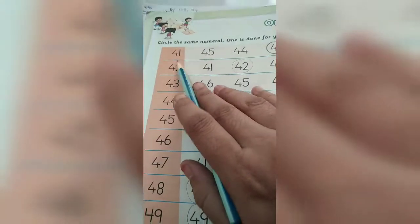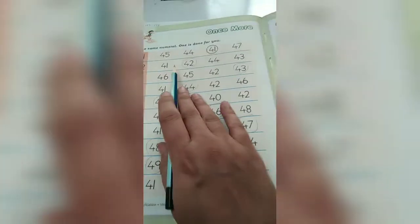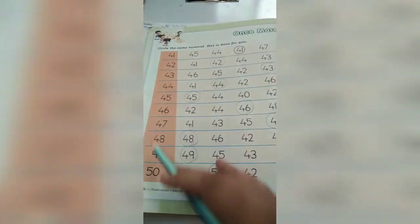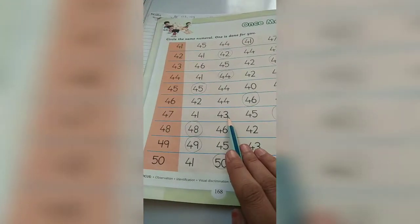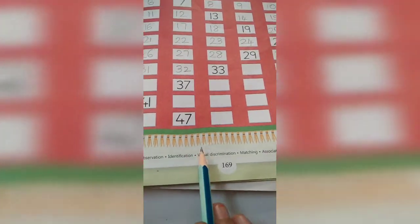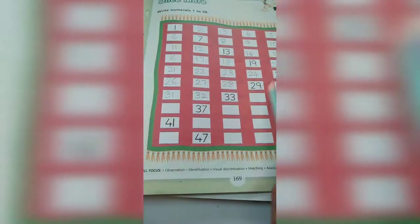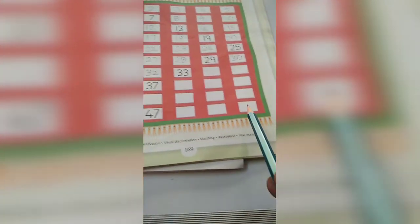Here now, you have to circle the same number: 41, 42, 43. All the numbers are in line, you have to circle the same number. Then here, page 169, you have to write 1 to 50. 1 to 50, you have to click on your own 50.